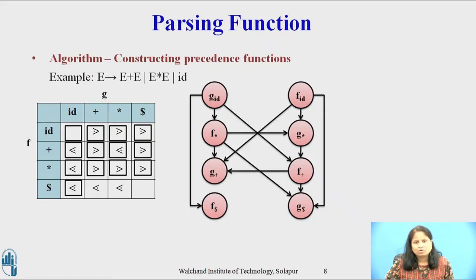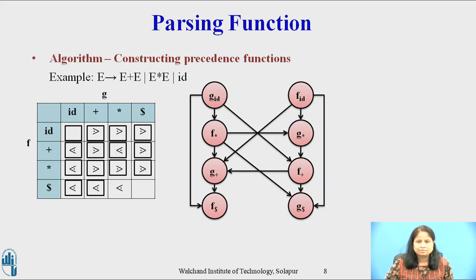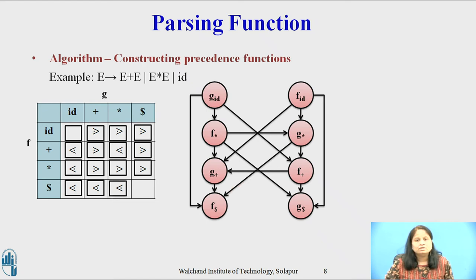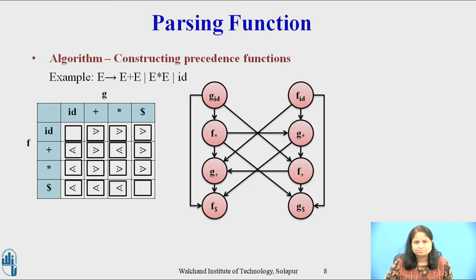Consider the fourth row in the operator precedence relation table. The relation between f(dollar) and g(id) is yields-precedence-to, so there will be an arc from g(id) to f(dollar). The relation between f(dollar) and g(plus) is yields-precedence-to, so there will be an arc from g(plus) to f(dollar). The relation between f(dollar) and g(star) is yields-precedence-to, so there will be an arc from g(star) to f(dollar). There is no relation between f(dollar) and g(dollar), so no arc is drawn.